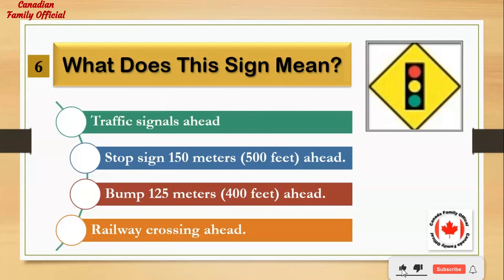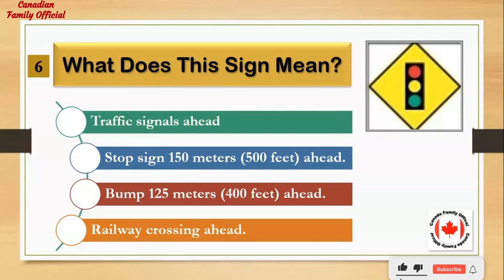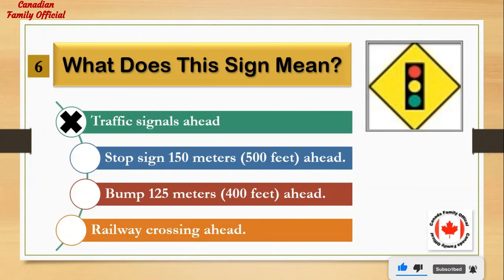What does this sign mean? Number 1: traffic signals ahead. Number 2: stop sign 150 meters (500 feet) ahead. Number 3: bump 125 meters (400 feet) ahead. Number 4: railway crossing ahead. And the answer is: traffic signals ahead.